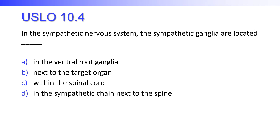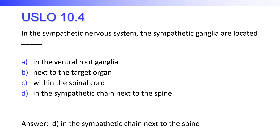In the sympathetic nervous system, the sympathetic ganglia are located in the ventral root ganglia, next to the target organ, within the spinal cord, or in the sympathetic chain next to the spine? The sympathetic ganglia are going to be located in the sympathetic chain next to the spine. The parasympathetic ganglia, by contrast, are going to be next to the target organ.